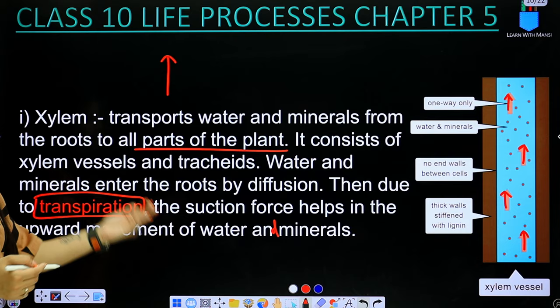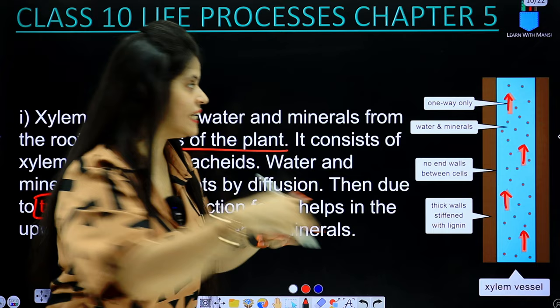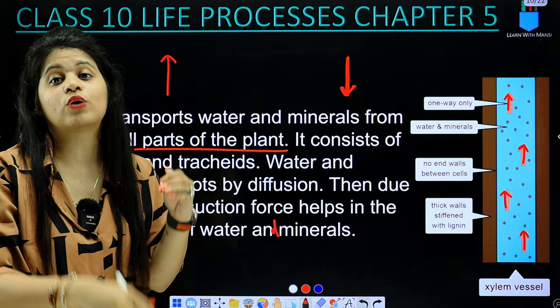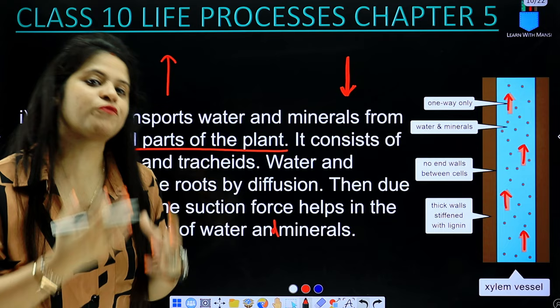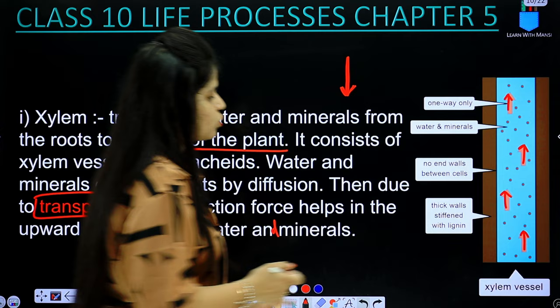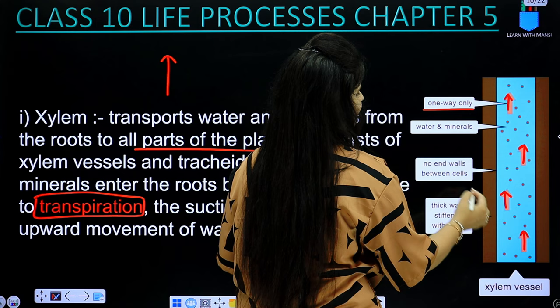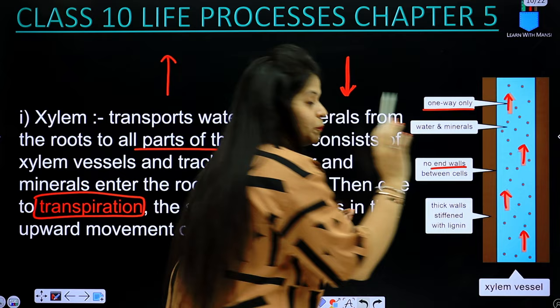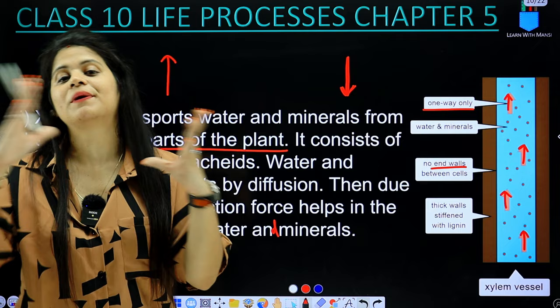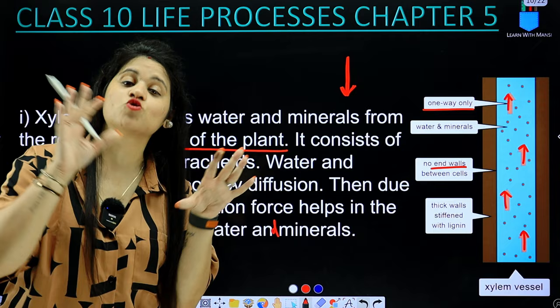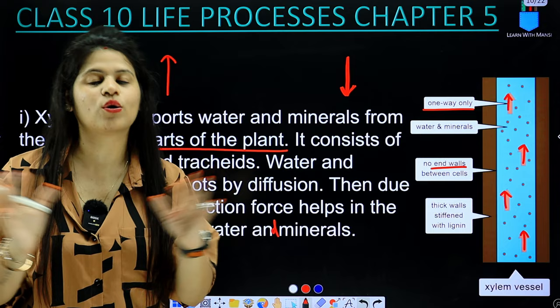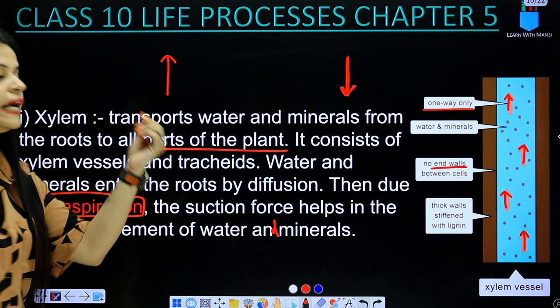If you see something in the leaves or below the leaves, it is a natural phenomenon that flows down due to gravity. But against gravity, something is pulling the water upward. Xylem vessels work in only one way — only one direction. There is only water and minerals transfer, and there is no end wall between cells. The walls are thick, stiffened with lignin.